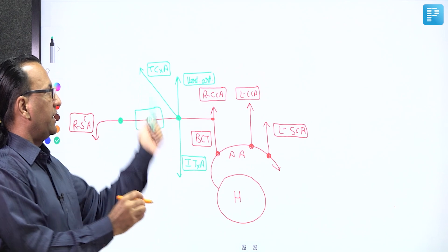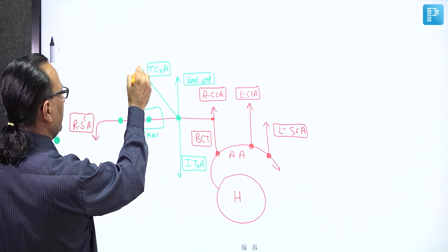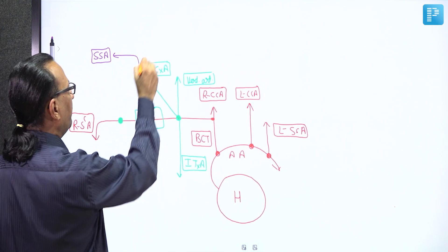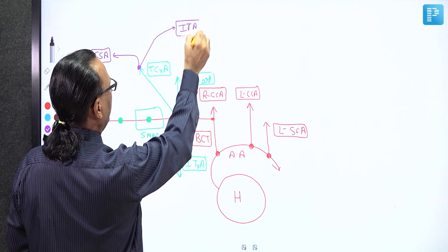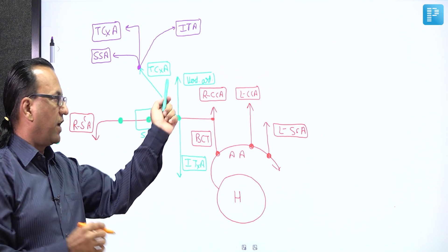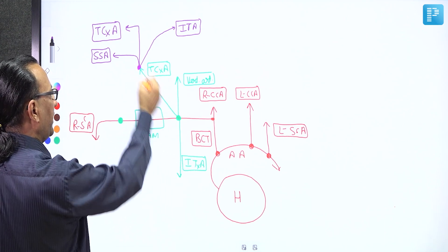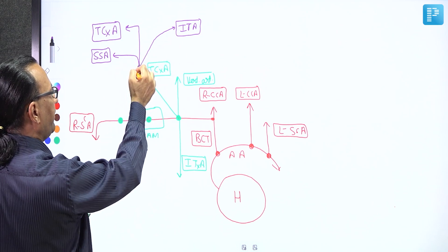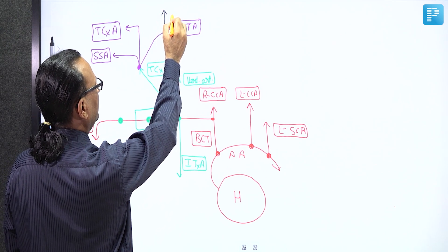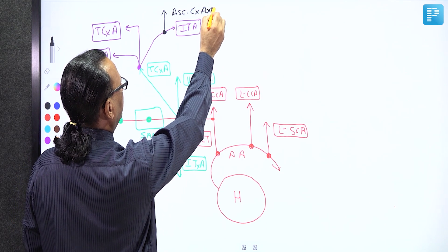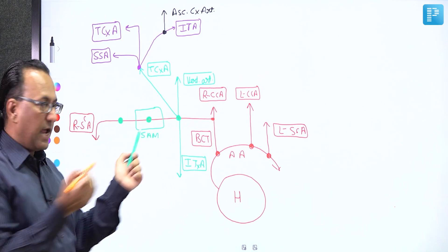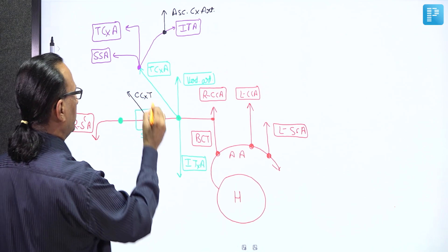The thyrocervical trunk gives the SIT branches: S for suprascapular artery participating in scapular anastomosis, I for inferior thyroid artery supplying the thyroid gland, and T for transverse cervical artery running transversely in the neck region. The inferior thyroid artery also gives one branch ascending in the neck — the ascending cervical artery. Then coming to the second part of the subclavian artery, under cover of the scalenus anterior muscle, is the costal cervical trunk.